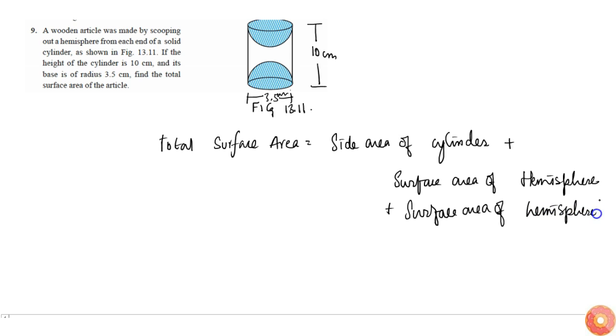I'll say hemisphere one and two, but since they are the same type of hemispheres, I can just add them. So this whole thing will become: side area of cylinder is simply...